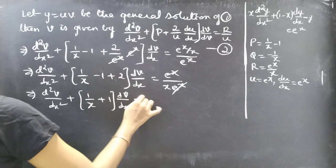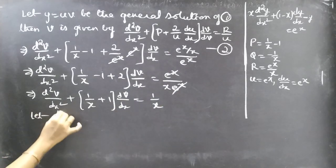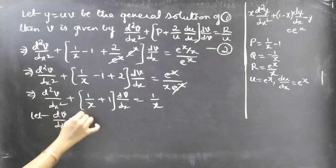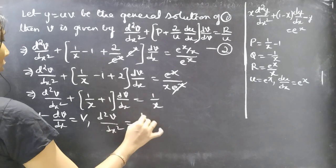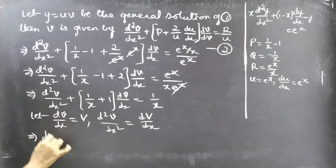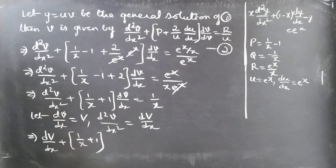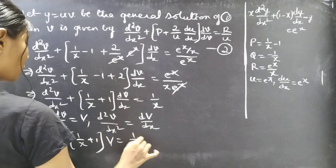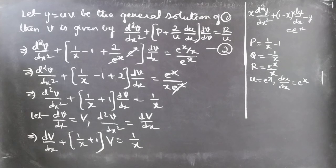Now let dV/dx = capital V, so d²V/dx² = dV/dx (derivative of capital V with respect to x). The equation becomes: dV/dx + (1/x + 1) · V = 1/x, which is a first-order linear equation in V and x.